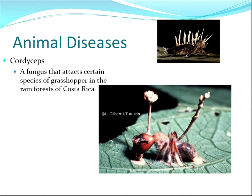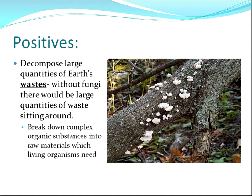Animals can sometimes have diseases from fungus too. Cordyceps is a good example — a fungus that attaches to small insects in the rainforest of Costa Rica and uses their bodies to reproduce and feed from. On the positive side, fungi are decomposers — they clean up all the dead stuff in the forest. They break down complex organic substances into raw materials which living organisms need. Without fungi we wouldn't be here, because they break down important dead stuff and return those nutrients back to the soil.